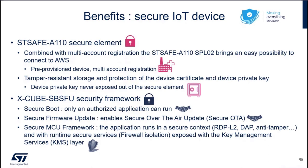With the STSAFE A110 secure element, we combine the AWS multi-account registration together with the SPLO2 profile to bring an easy possibility to connect to AWS. We have a tamper-resistant storage to protect our assets: the device certificate, the device private key, as well as the SBCFU certificate. On one side, we have a device certificate and device private key used to connect to Amazon, and on the other side, we have the SBCFU certificate used for authenticating the application before running it. All these elements are stored in STSAFE A, but they are not for the same purpose.